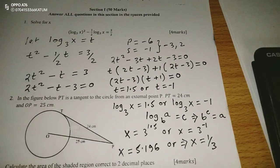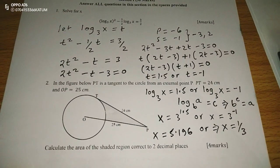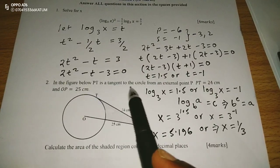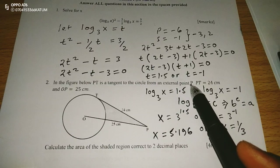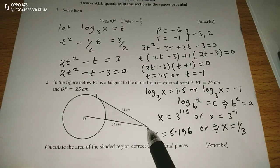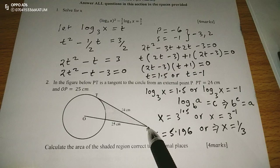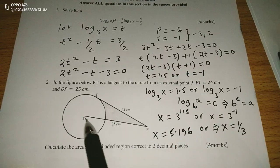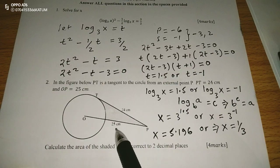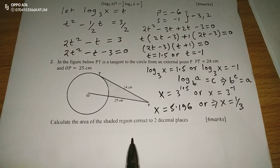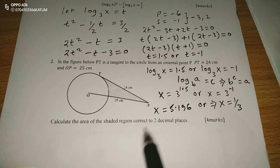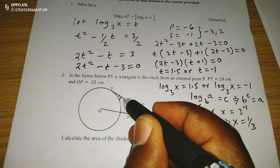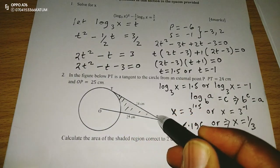We can proceed with another question here. In the figure below, PT is tangent to the circle from an external point P. Then PT is equivalent to 24 centimeters and OP equals to 25 centimeters. We are told to calculate the area of the shaded region correct to two decimal places.